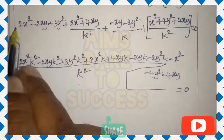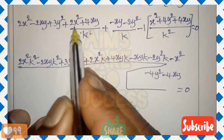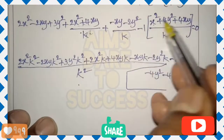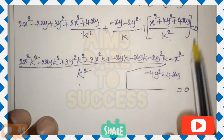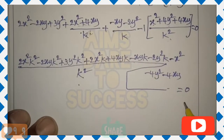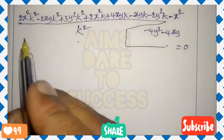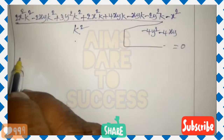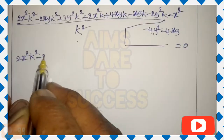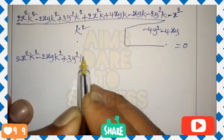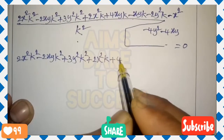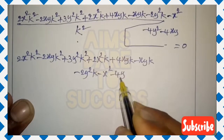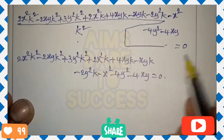Now collecting like terms: x² terms — coefficient is (2k² + 2k − 1). xy terms: −2k² + 4k − k − 4 = −2k² + 3k − 4. y² terms: 3k² − 2k − 4. So the equation becomes: x²(2k² + 2k − 1) + xy(−2k² + 3k − 4) + y²(3k² − 2k − 4) = 0.